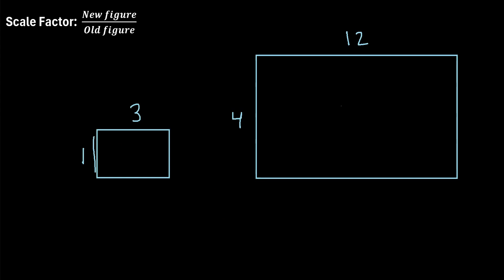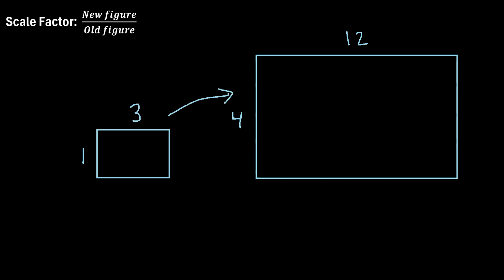We have a small rectangle where one side has a length of 1 and the other side has a length of 3. Then we have a large rectangle where one side has a length of 4 and the other side has a length of 12. We're told these are similar figures and we want to find the scale factor going from the small rectangle to the large rectangle. The way we do that is we use this formula: take one side of the new figure and divide it by the corresponding side of the old figure.